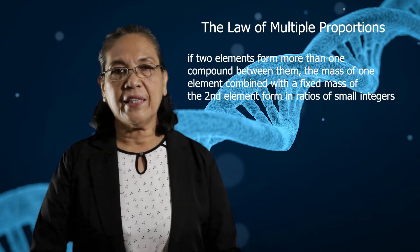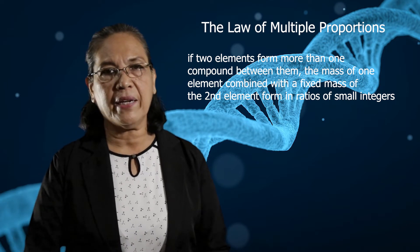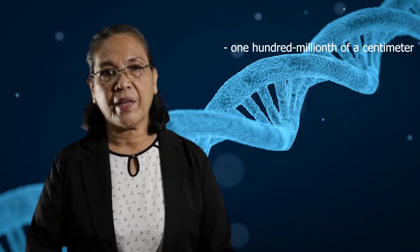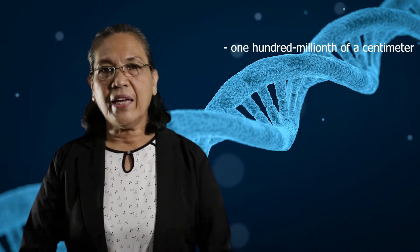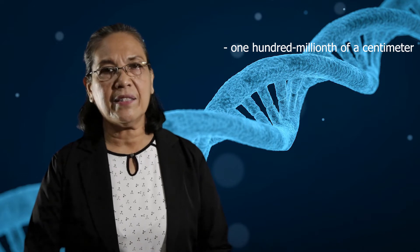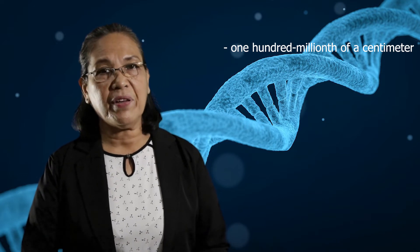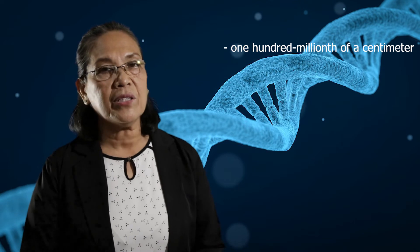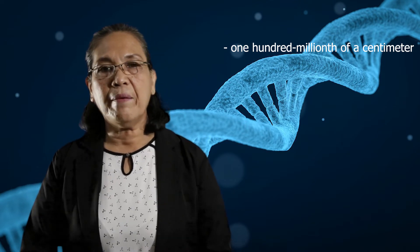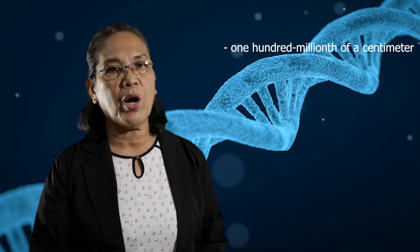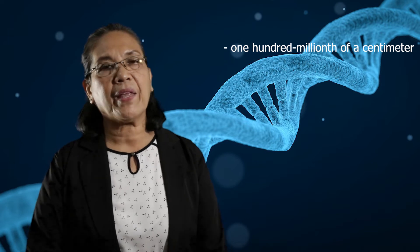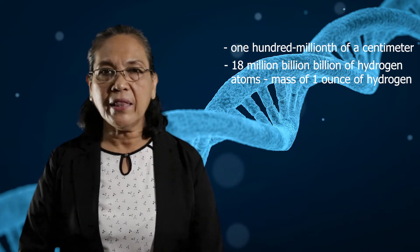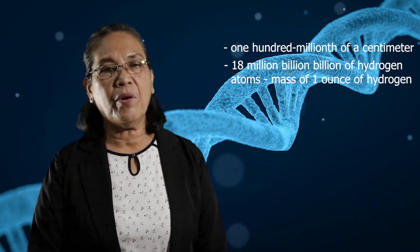To describe further an atom, it is stated that the atom is a very, very small particle and that its diameter is one hundred millionth of a centimeter. About the mass of an atom, it is said that it is very difficult to determine its mass even if the instrument to be used is so sensitive. However, masses of individual atoms can be determined by measuring a large number of these atoms.